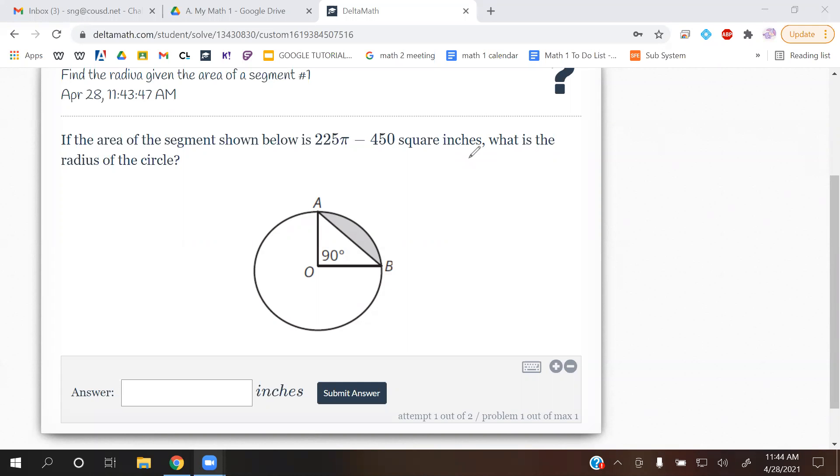So let me first write down that formula that we had. The formula that we had in the last category was 1/4πr² minus 1/2r². Okay, so there's literally two ways that you can do this on either way is valid.